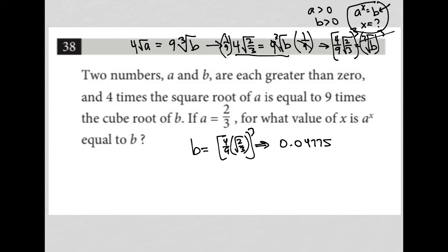Okay? So, now I know that I want A to the X to equal 0.04775. Again, I know that A is two-thirds. So, I want two-thirds to the X power to equal 0.04775.